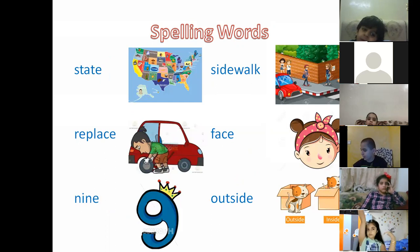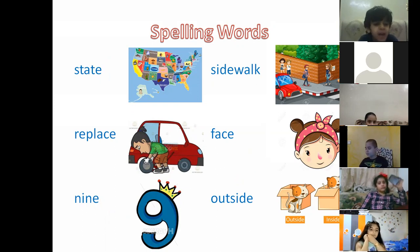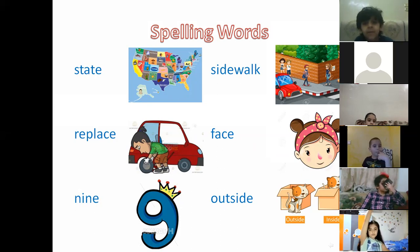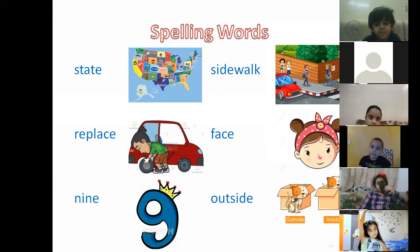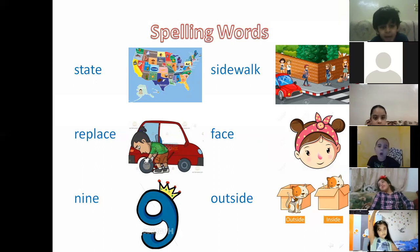Now you're going to read the words for me one by one. Sultan, read all the words quickly. States, sidewalk, replace, face, nine, outside, inside. Wonderful — and you added inside. Excellent. Abdurrahman: states, replace, nine, sidewalk, face, outside. Excellent.